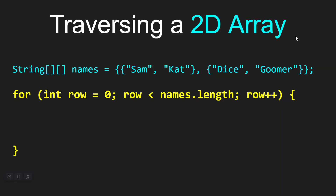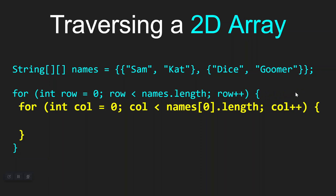So let's look at how we use nested for loops to traverse this array. You start with your outer for loop, which traverses all of your rows. You would say: for int row = 0, as long as row is less than names.length — because we're traversing the number of rows — then row++. From there you do your inner for loop, which traverses all of the columns: for int col = 0, as long as col is less than names[0].length, then col++.